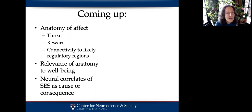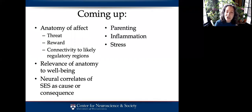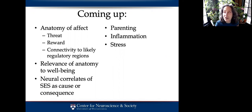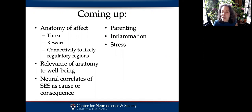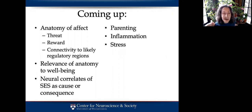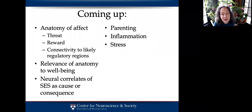Our second speaker will refer to some animal studies that give us better purchase on causality. Finally, I want to flag three factors that we will see frequently in these different talks, and that appear frequently in studies of SES and mental health in general: parenting, inflammation, and stress. These are interconnected by a web of mutual influence — for example, if you're highly stressed, it's harder to be a good parent, or it certainly changes your approach to parenting.